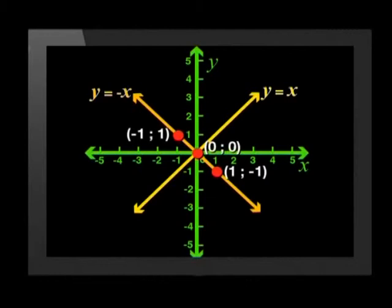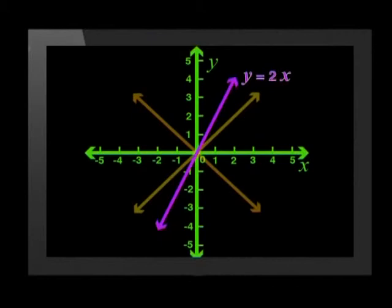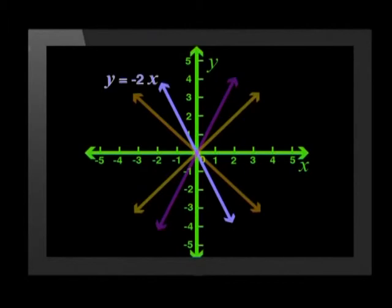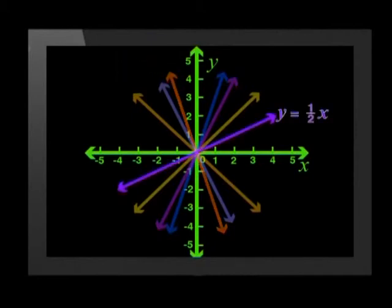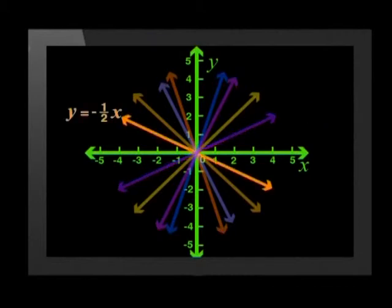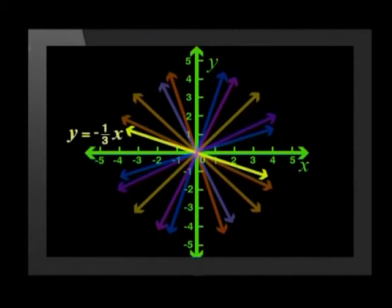That's a good observation. Now let's add more graphs and compare them. Here is y equals 2x, and now I add y equals negative 2x. Now y equals 3x and y equals negative 3x. Here is y equals one half x and y equals negative one half x. Lastly, here are the graphs of y equals one third x and y equals negative one third x. Keep comparing these graphs as we add them.